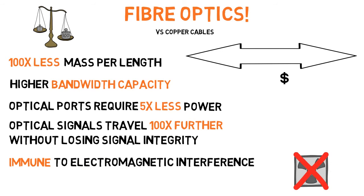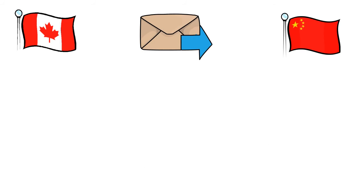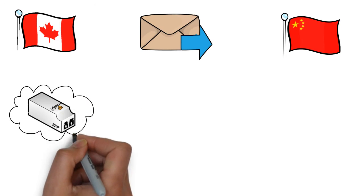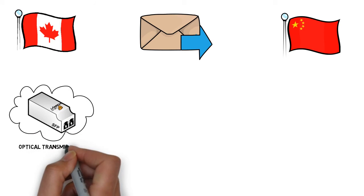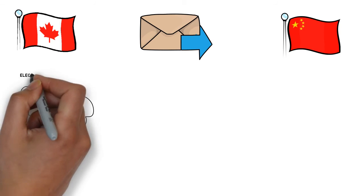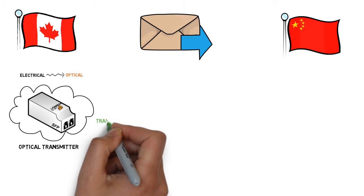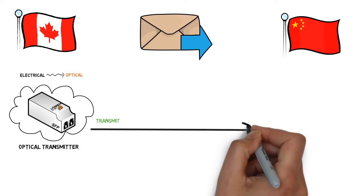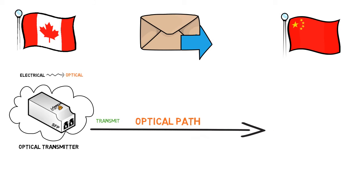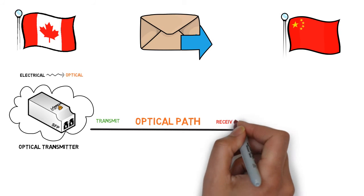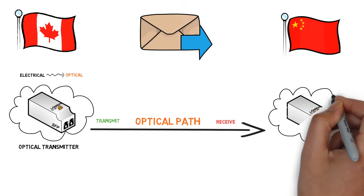Now, how exactly is this technology implemented? To understand this, let's go back to our example between Canada and China. In Canada, an optical transmitter will take an electrical signal and transform it into an optical one. This signal will then be transmitted over a series of optical fibers and will be received in China by an optical receiver.